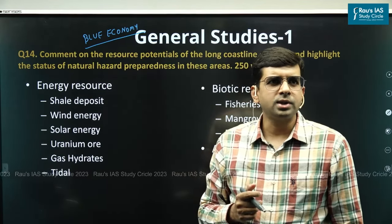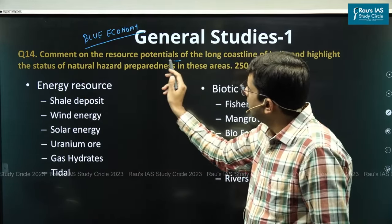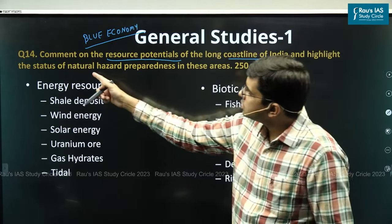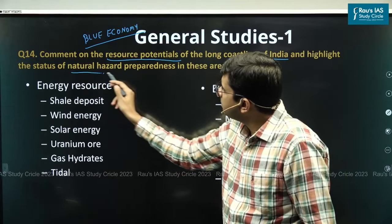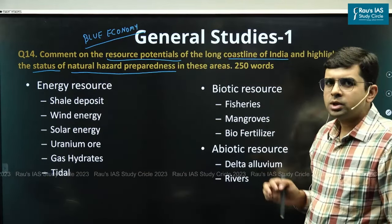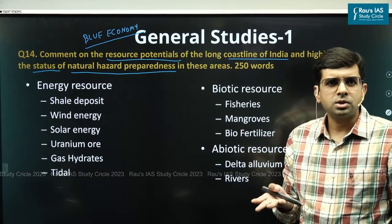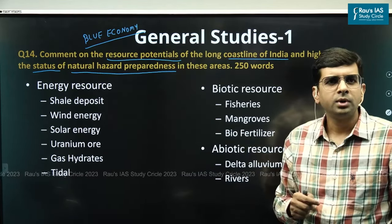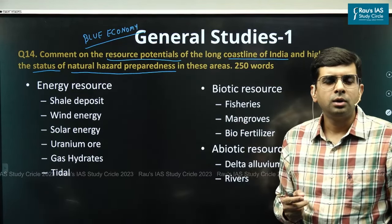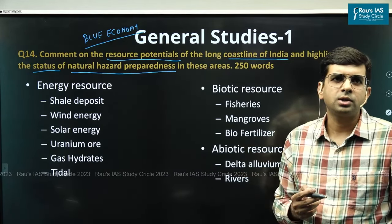What exactly is the question asking? It says: 'Comment on the resource potential of the long coastline of India and highlight the status of natural hazard preparedness in these areas.' The question has two different demands. The first asks about the resources present along the coastline of India, and the second asks how prepared we are to handle extreme natural events occurring at the coastline areas of India.